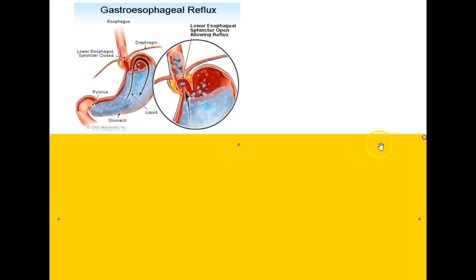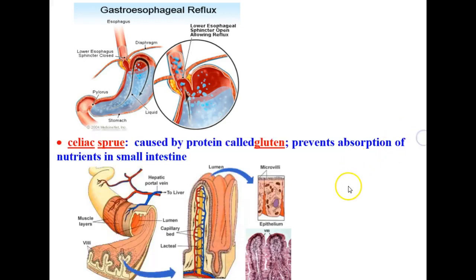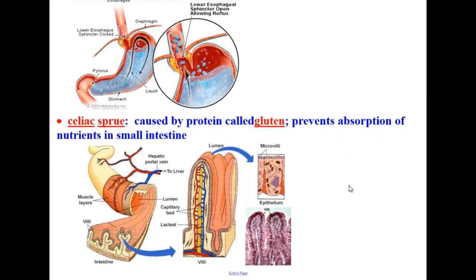The last disorder of the digestive system we'll take a look at here is celiac sprue. Celiac sprue is caused by a protein called gluten, which in turn prevents absorption of nutrients in the small intestine. So you may hear of people that go on a gluten free diet, for example. And that's because they are having trouble absorbing nutrients in their small intestine.